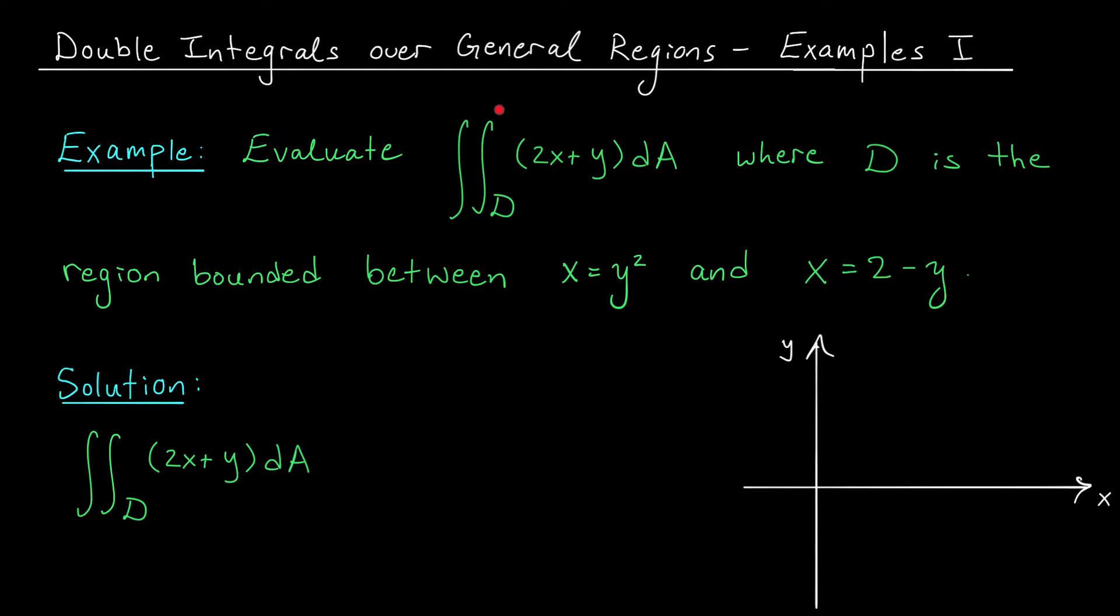Now we know that we evaluate double integrals by setting up two iterated single integrals, one with respect to x and one with respect to y. But if we're not integrating over a rectangle, the order of integration is super important. To figure out the correct order to use, we always start by graphing the region D.